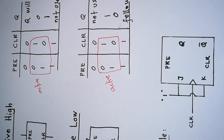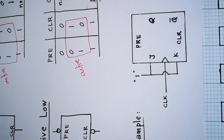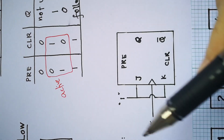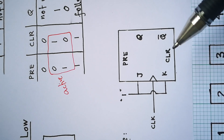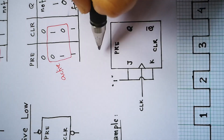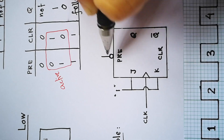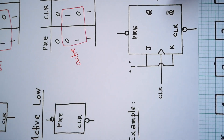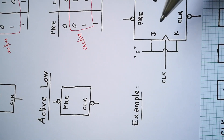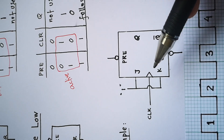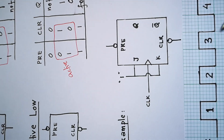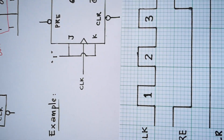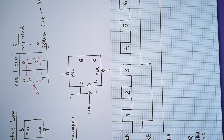Okay, let's take a look at the example for asynchronous inputs. We have this symbol with PRE and CLEAR. We have a bubble, so we know that this is active low. And we have a JK flip-flop. How do we start to draw the timing diagram?